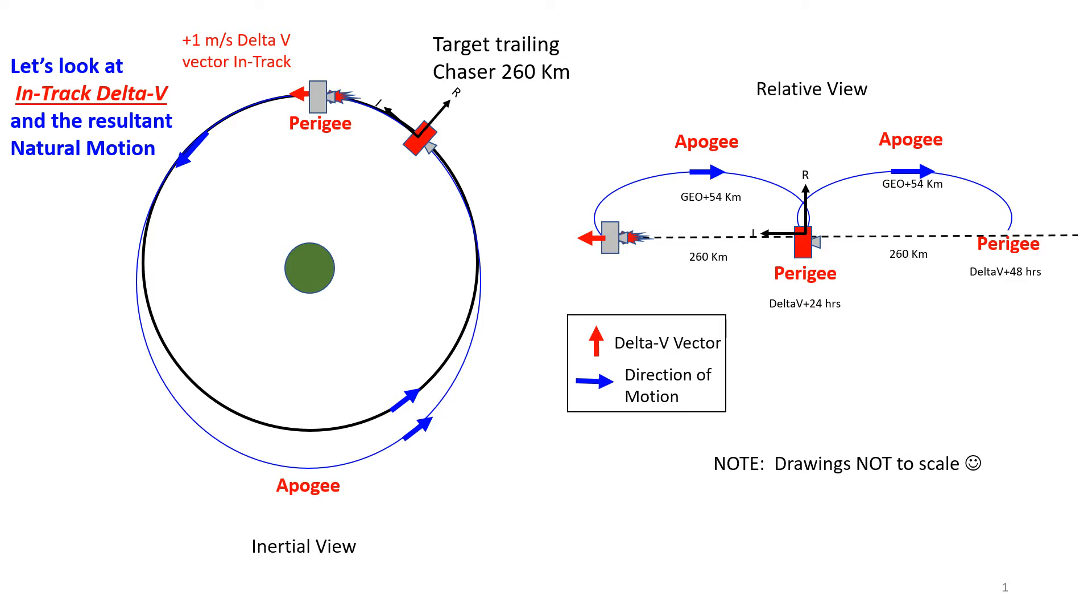We are now going to look at what happens if you do an in-track delta-v. I call these phasing orbits. You change the eccentricity and the orbit period, and it enables the chaser to relocate relative to the target. Here's the chaser, here's the target, they're orbiting on the black line orbit. They're separated by 260 kilometers, which is about a third of a degree in longitudinal arc at geo.